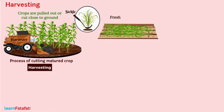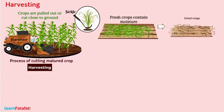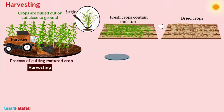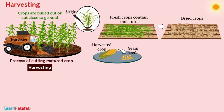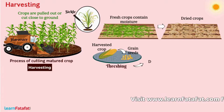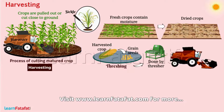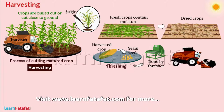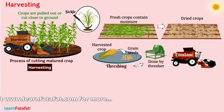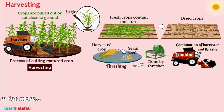Fresh crops contain moisture, so these must be dried in the sun. The separation of grain seeds from harvested crop is called threshing. It is done by a thresher. There is another machine called a combine, which is the combination of a harvester and thresher.